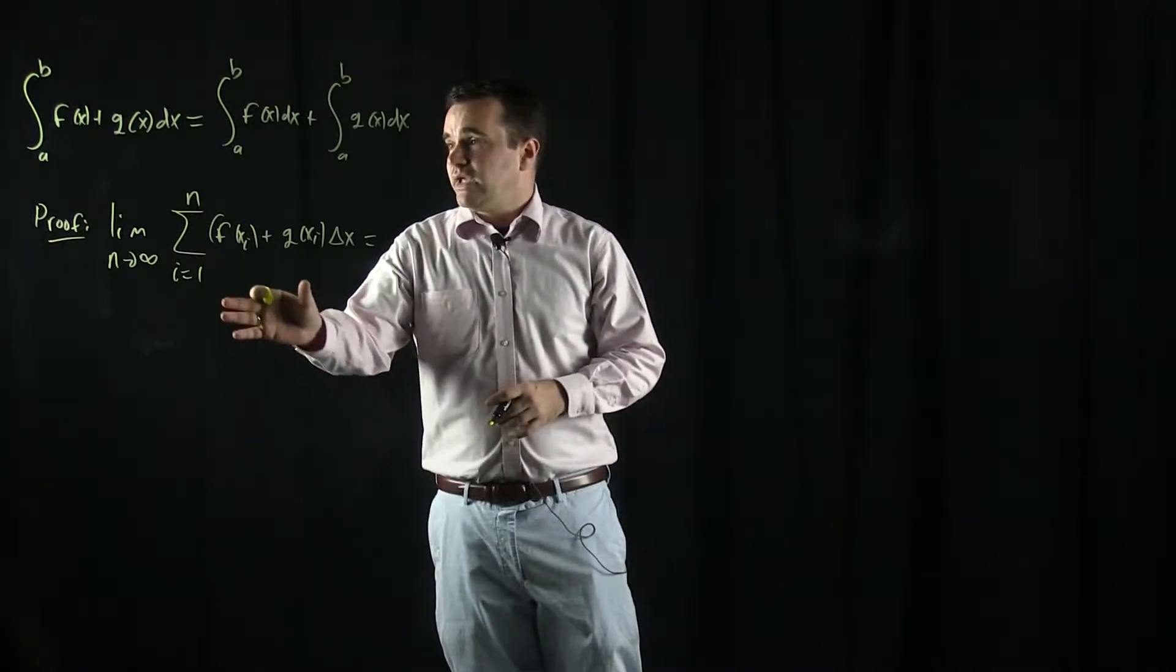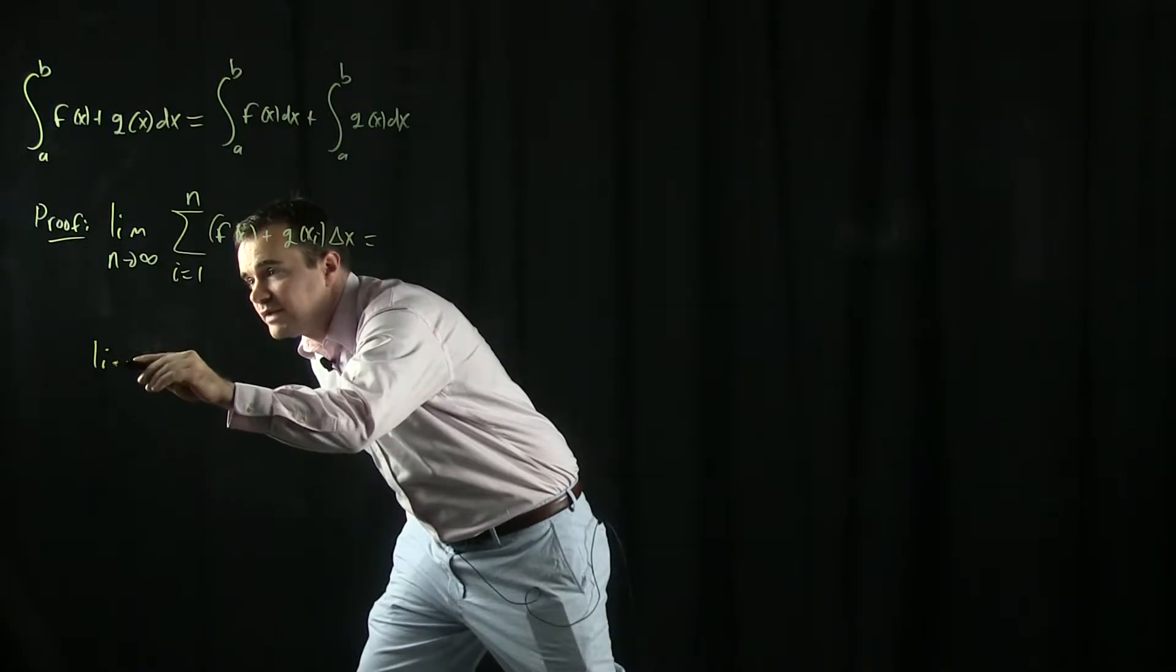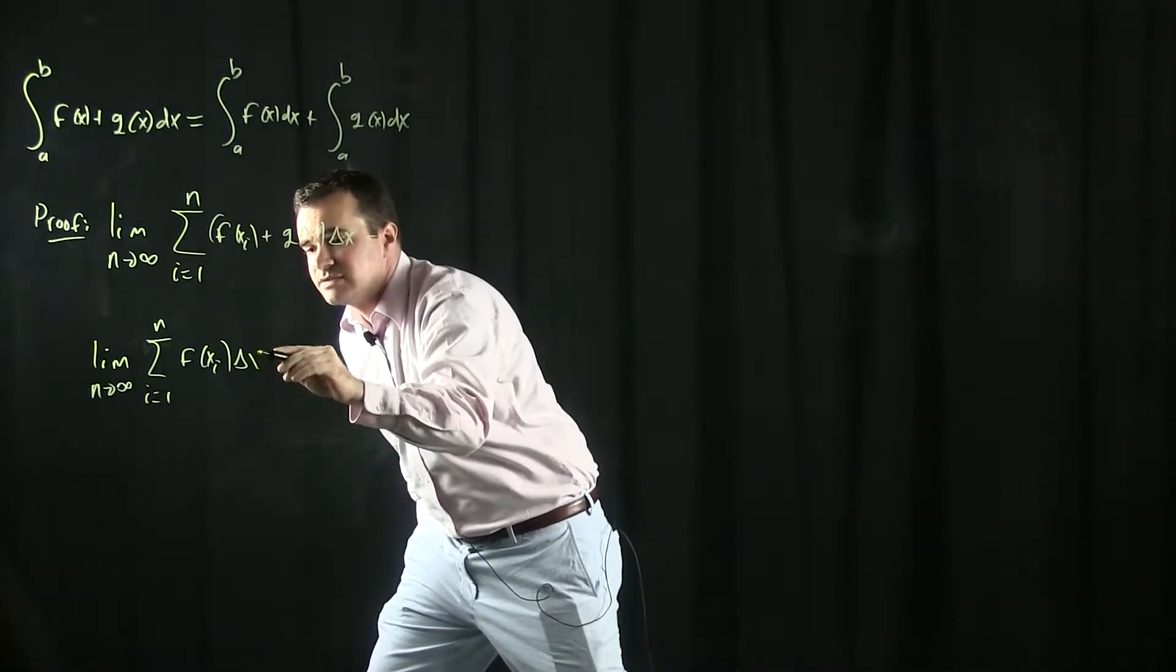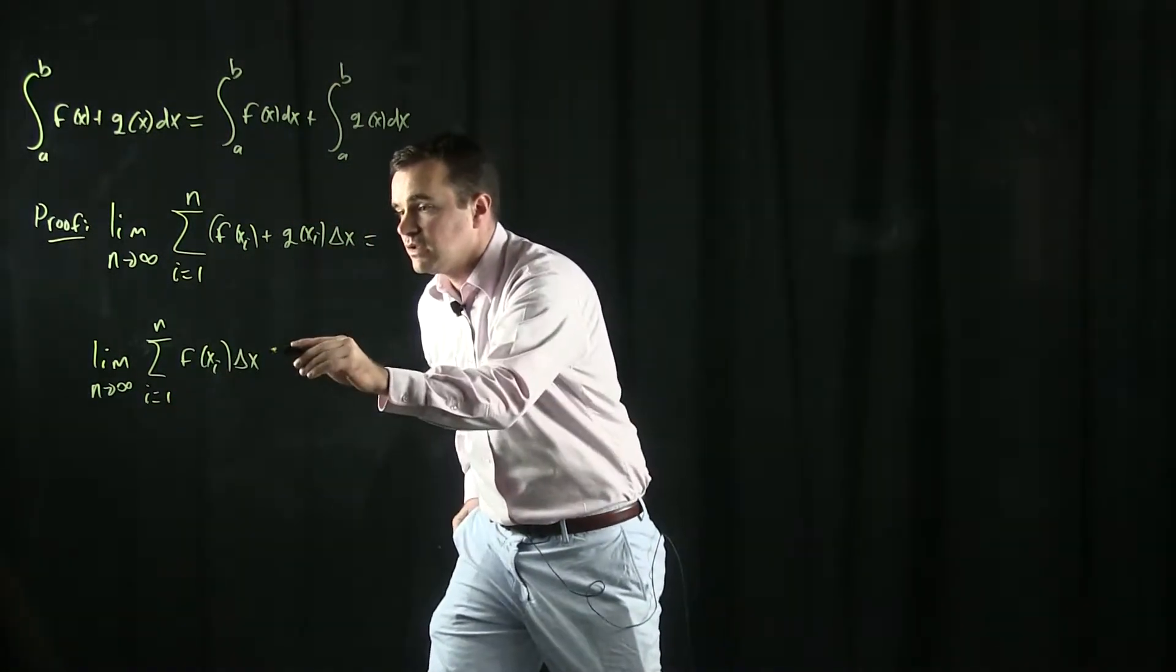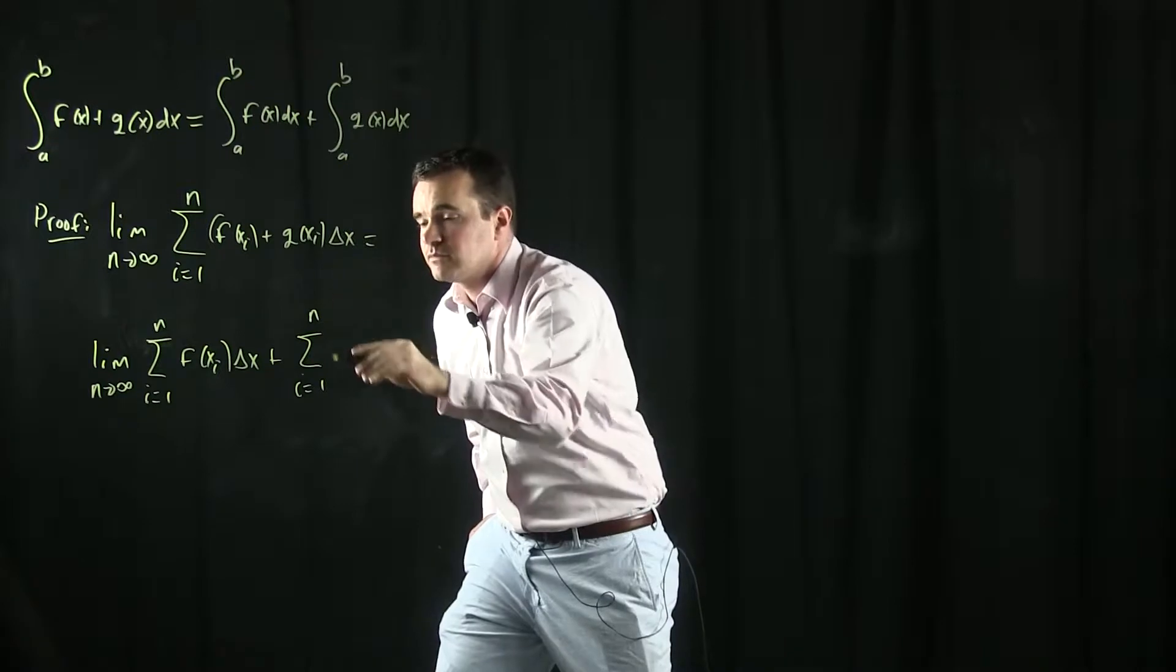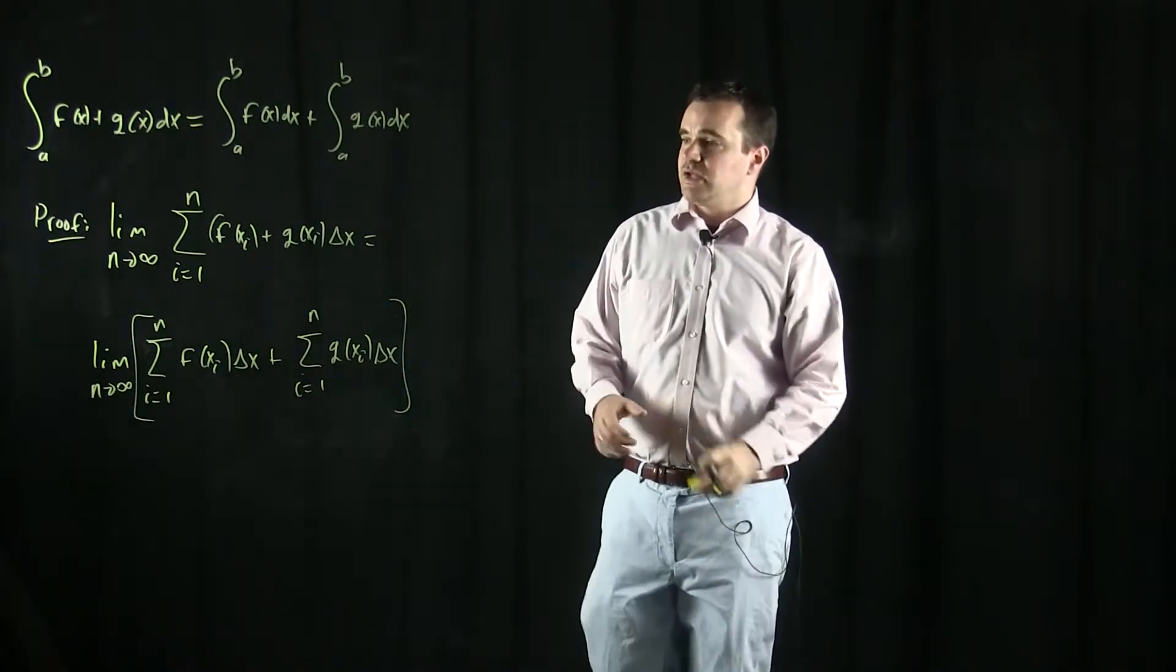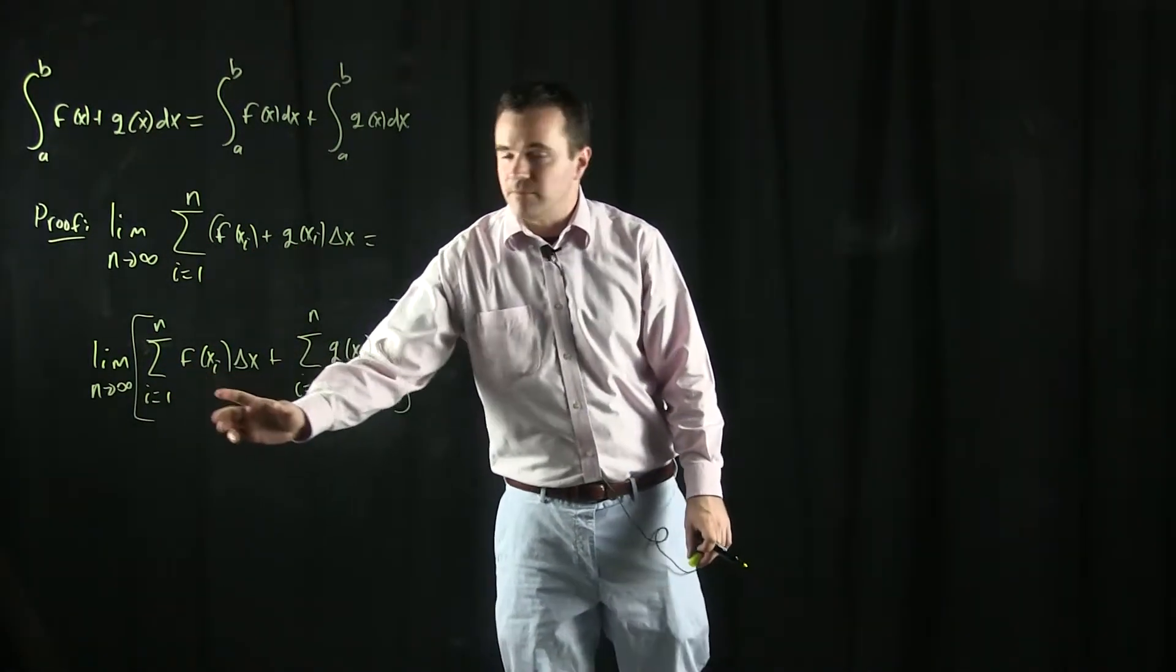And so what I can first do is I can distribute out the delta x. So I'll go ahead and put that here. And I'll carry through writing down the limit. So this is f of xi times delta x. And there's n rectangles, so there's n terms, i goes from one to n, plus the n terms for g of x. And I'm taking the limit as n goes to infinity of all of that. And I kind of did two steps here. So you can distribute out the delta x here, and then you can break up the sum into two sums.